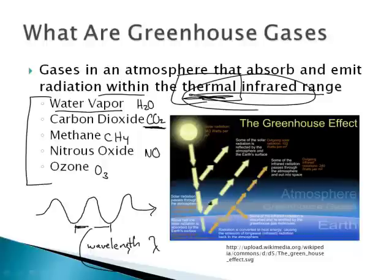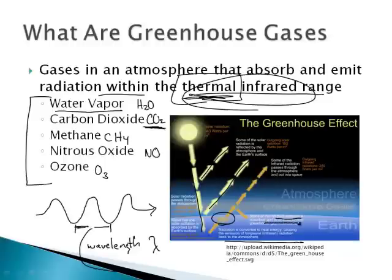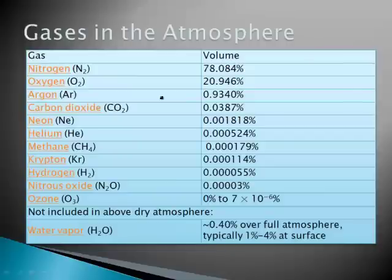Look at this picture — it's a pretty cool picture. The sun comes down, bounces a lot of it — most of it comes back. Some of it, though, hits and turns into heat energy. Some of the infrared is absorbed and re-emitted by the greenhouse gas molecules, so it comes back down. It's very important to have these particular gases.